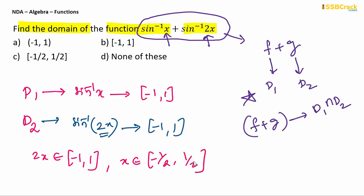Sine inverse range is based on sine function range, which you know is minus 1 to 1. The sine function minimum value is -1 and maximum is 1. If the angle is 2x, this becomes minus 1/2 to 1/2. If you have sine inverse 3x, it would be minus 1/3 to 1/3.